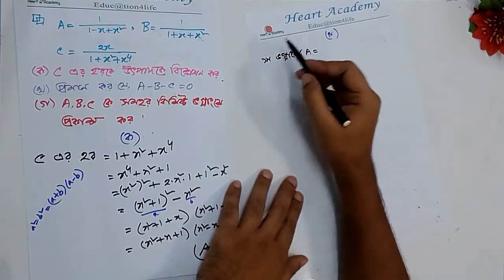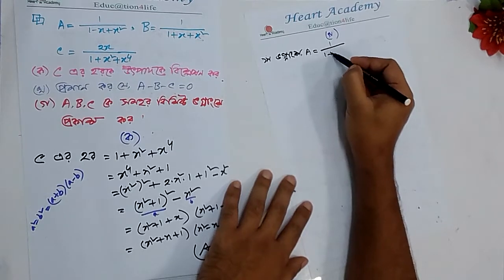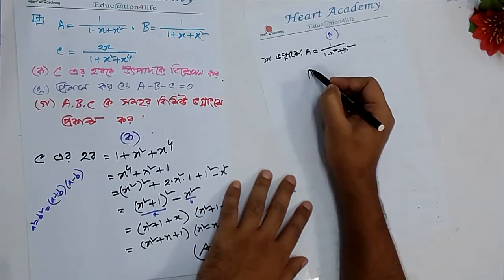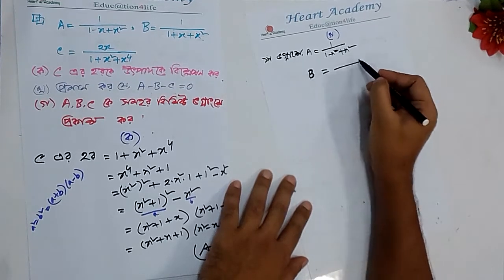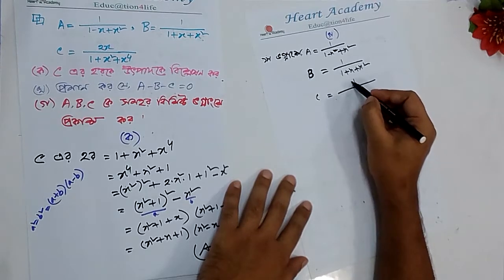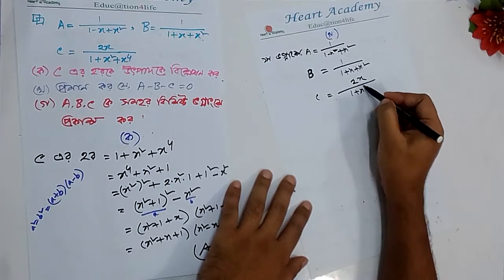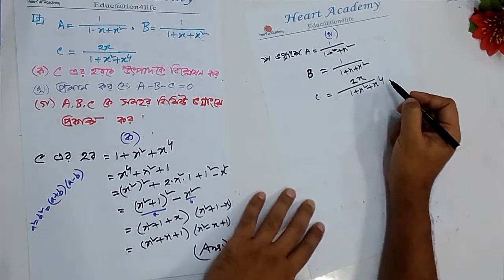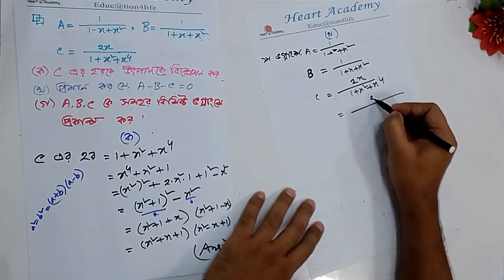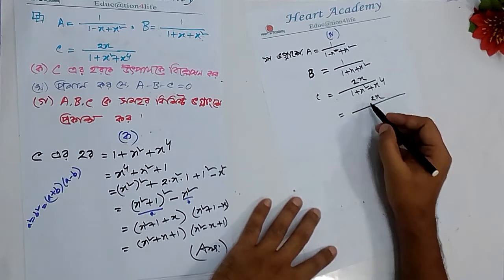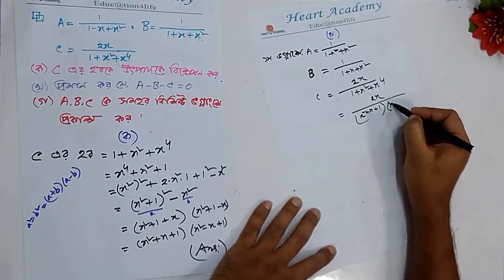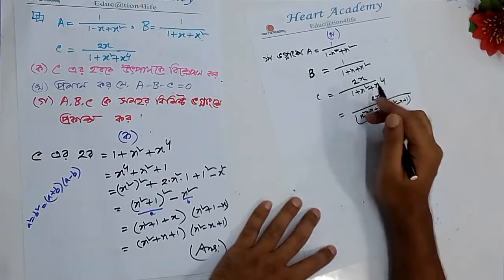Then we will add: 1 by 1 by 2 by 1 by 1 minus x² plus x². Then 1 plus x plus x², and 2x by 1 plus x² plus x² over 4.